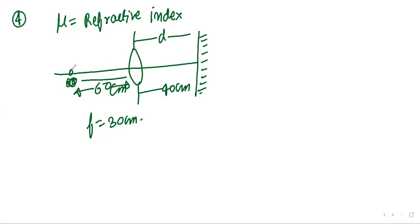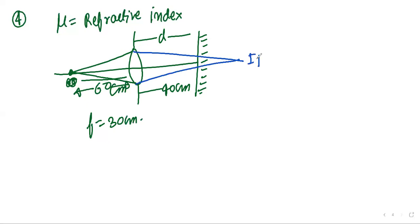Light from the object hits the convex lens and converges to form image I1. From there, it reflects off the plane mirror and joins at another point. The distance from the lens to the mirror is 40 cm, and we use 20 cm and 30 cm values.